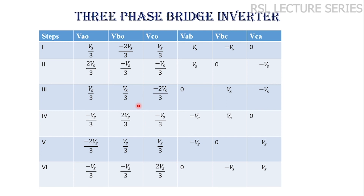This is the overall summary table. Step 1 (0–60°), step 2 (60–120°), step 3 (120–180°), and so on. The first three columns are phase voltages and the next three are line voltages. For step 1: VAO = Vs/3, VBO = −2Vs/3, VCO = Vs/3; line voltages Vs, −Vs, 0. The same derivation method applies to all other steps, and the complete table summarizes phase and line voltages for all six steps of the 180 degree mode operation.